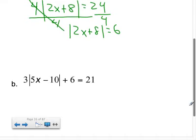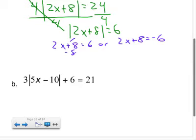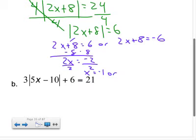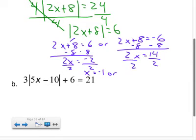And now from there, that's when I set up my two cases. So either 2x plus 8 equals 6 or 2x plus 8 equals negative 6. And then I just go ahead and use my algebra skills that we've talked about this year. So 2x equals negative 2. Divide both sides by 2. So either x equals negative 1 or 2x equals negative 14. Divide by 2. So or x equals negative 7.